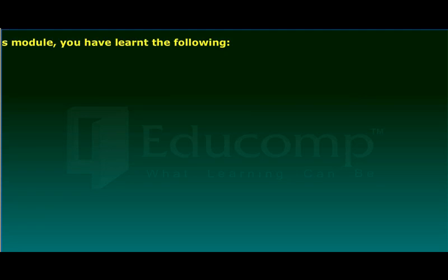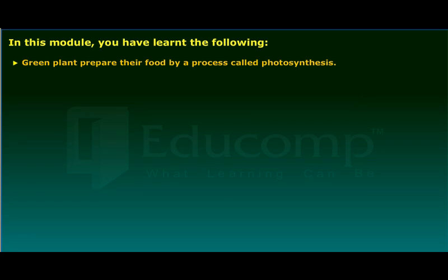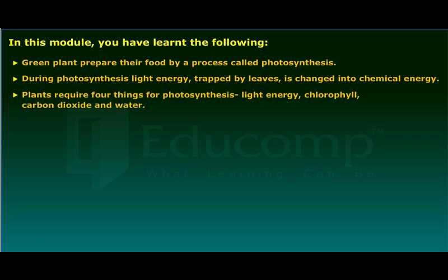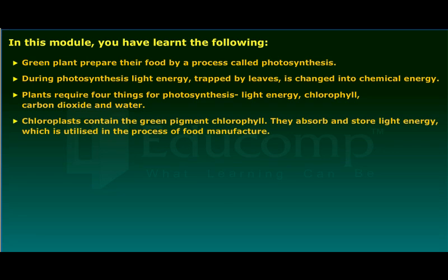In this module you have learned the following: green plants prepare their food by a process called photosynthesis. During photosynthesis, light energy trapped by leaves is changed into chemical energy. Plants require four things for photosynthesis: light energy, chlorophyll, carbon dioxide, and water. Chloroplasts contain the green pigment chlorophyll.